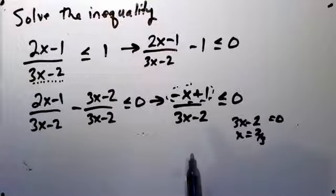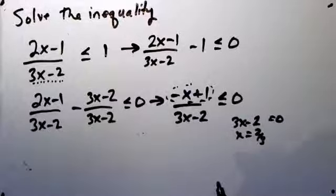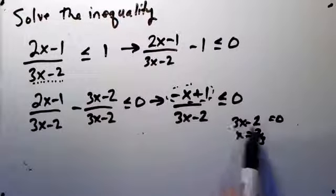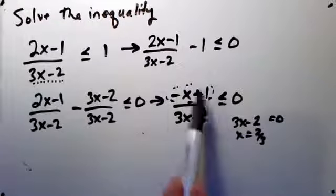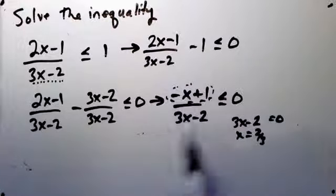Those are going to occur at places where the function is undefined. That occurs here at 3x minus 2 equals zero or x equals two-thirds or where I have a zero for this rational expression.